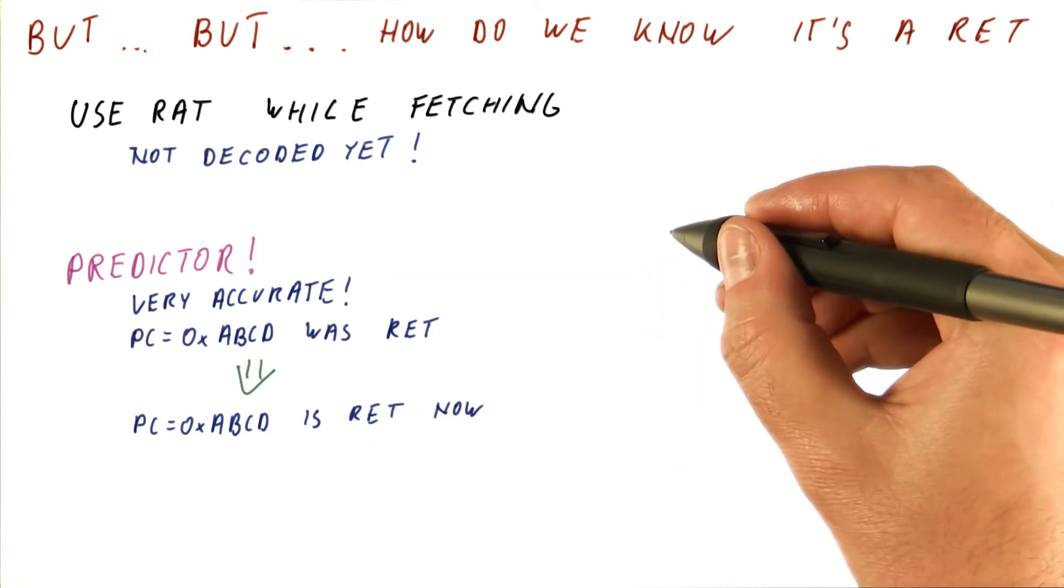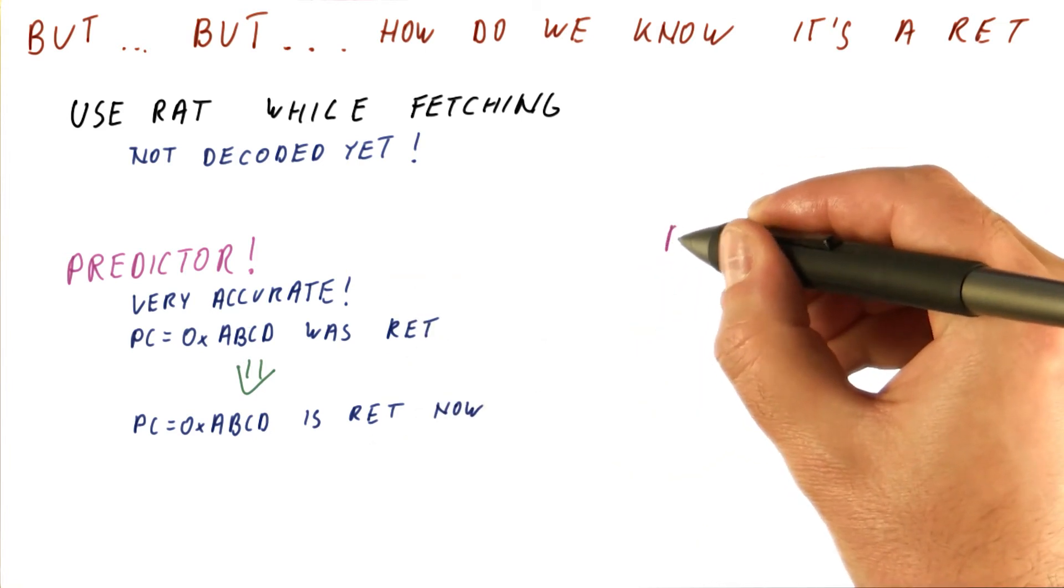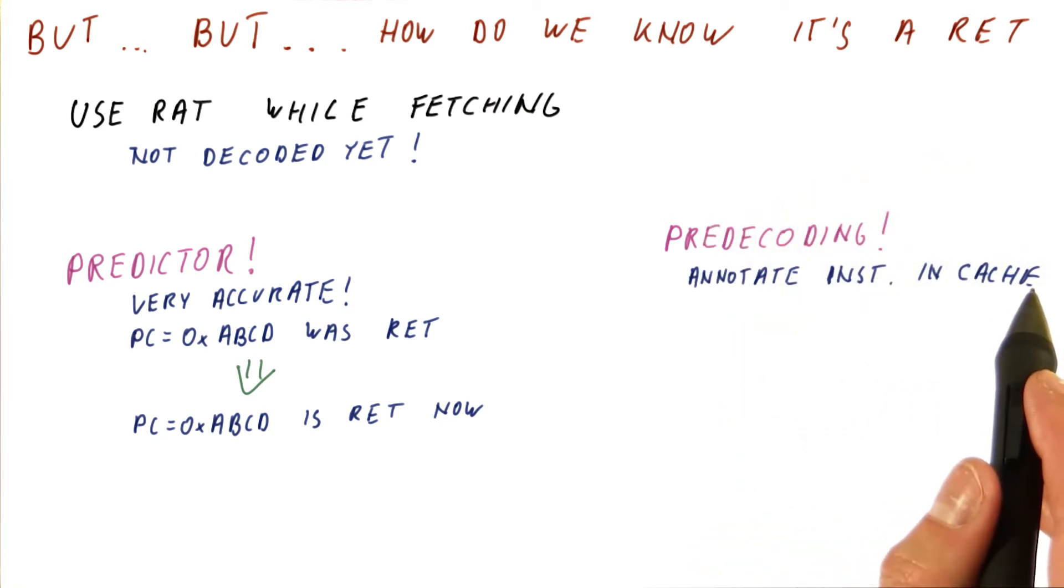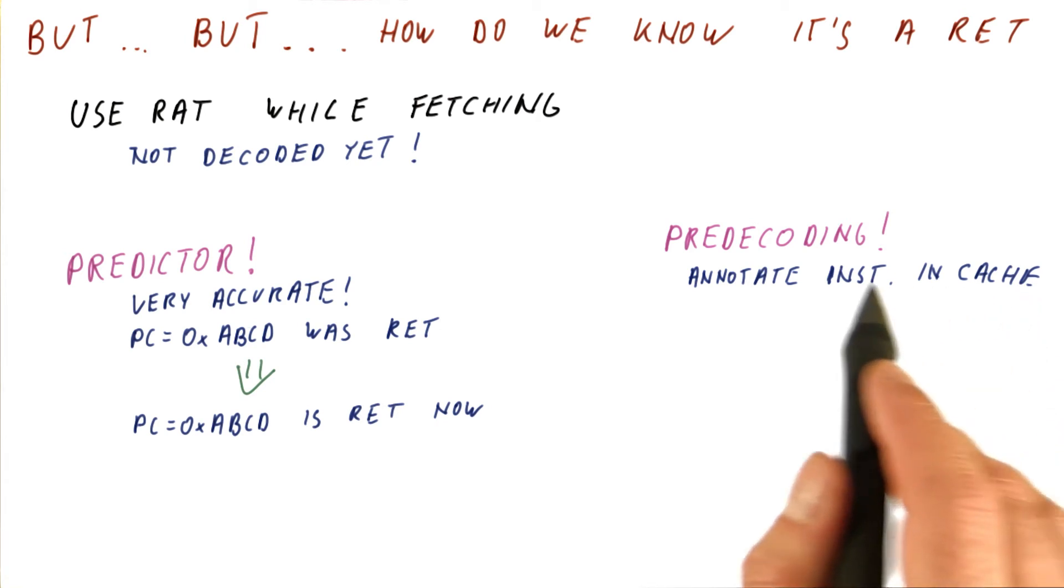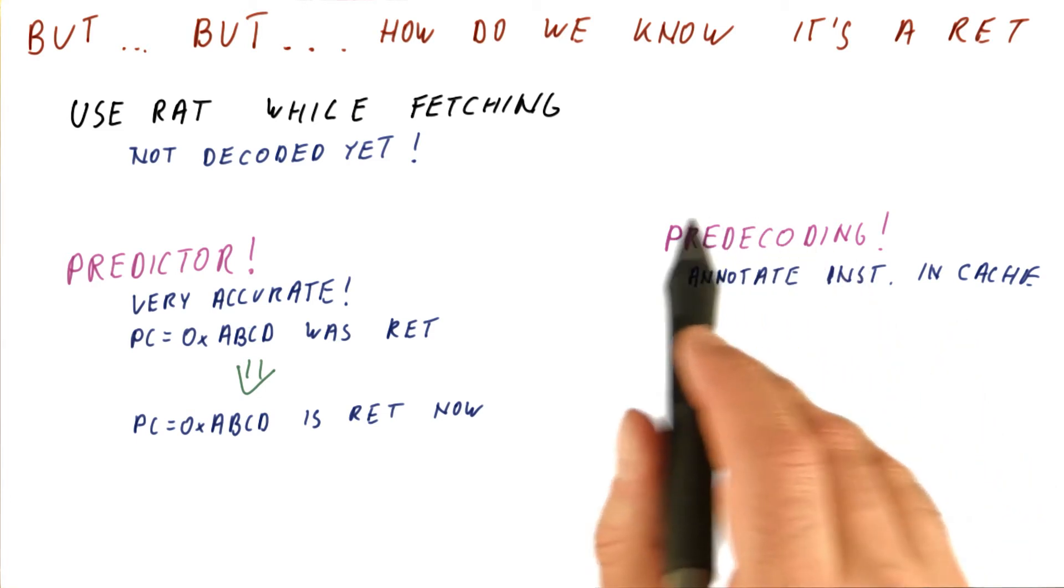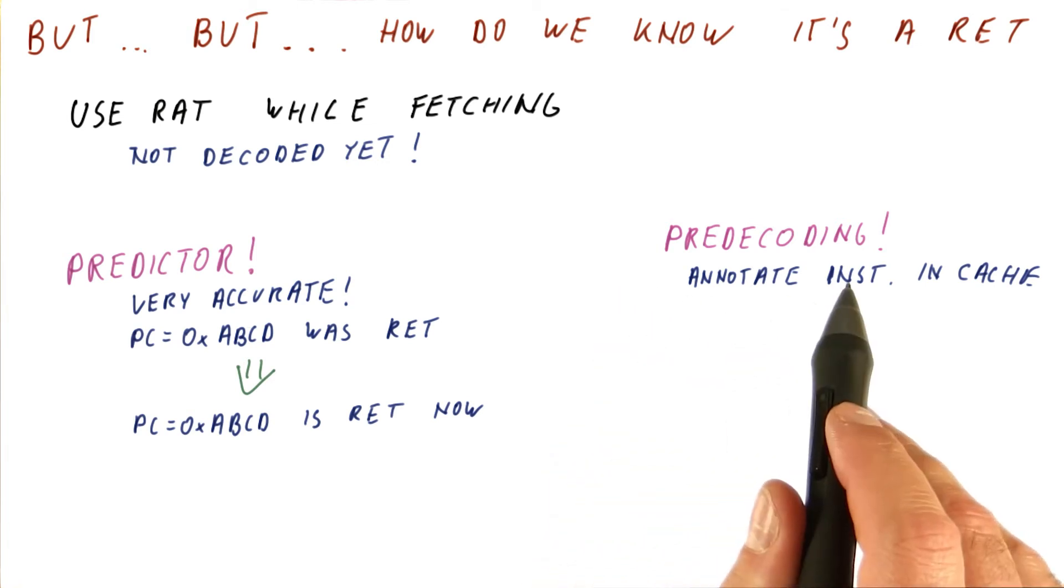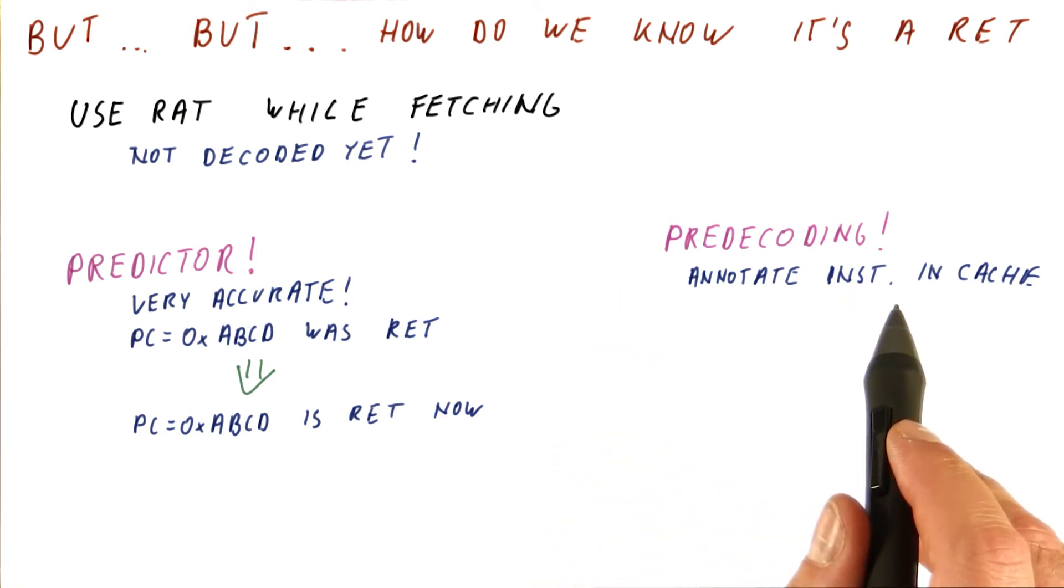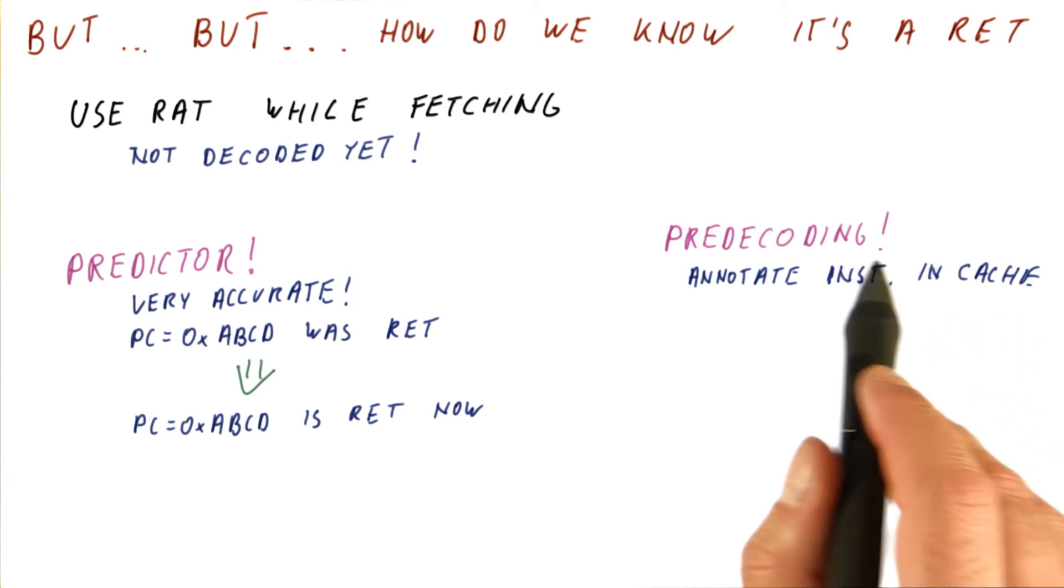Another approach is to use a so-called pre-decoding. We will soon see that the processor really contains a cache that stores instructions that have been fetched from memory, and it's fetching instructions from the cache, and only if the cache doesn't already contain the instruction, it goes through memory. So the pre-decoding works by, when I'm fetching from memory, I decode enough of the instruction to know that it's a return or not, and I store that information along with the actual instruction in the cache.